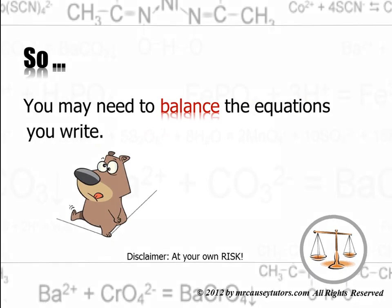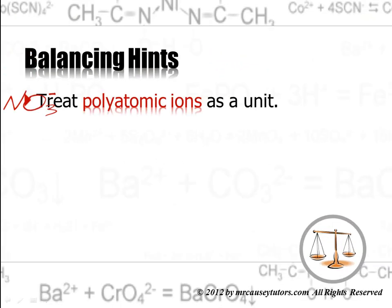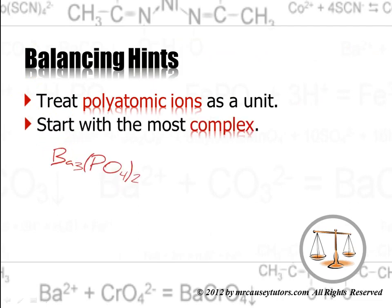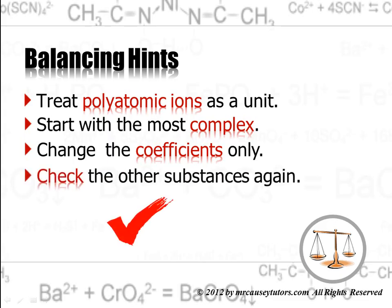Here are some balancing hints. Treat polyatomic ions as a unit. Start with the most complex. Change the coefficients only. Do not change the subscripts once you know what the compound is. And then check all the other substances every time that you do something — make sure you didn't change the balance of everything. Things need to balance, just like the equations in algebra; they must balance.